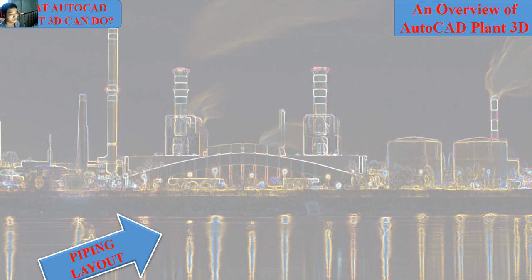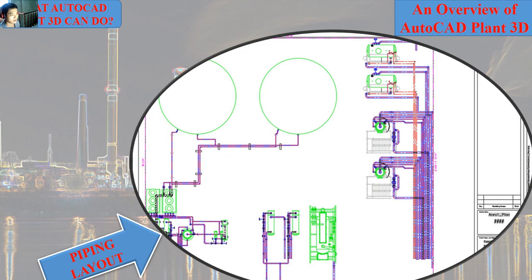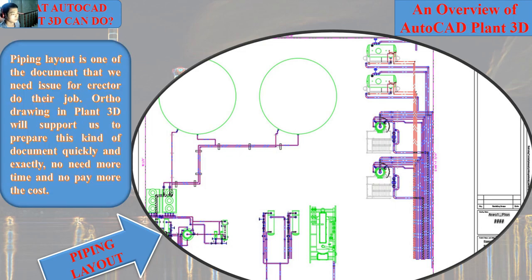Plant 3D will also support us in preparing the piping layout document that we have to issue for the contractor to do their job. The orthographic drawing in Plant 3D will support us in preparing this kind of document quickly and accurately.